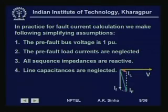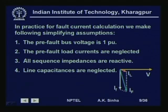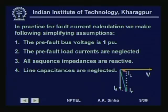In practice, we make some more assumptions. Since pre-fault currents are generally much smaller compared to fault currents, we neglect load impedances. The main assumption is that pre-fault bus voltage is 1 per unit. This is a valid assumption because under normal operating conditions, bus voltages in the power system are very near 1 per unit — typically of the order of 0.98 to 1.02 per unit. Therefore, it is valid to assume that pre-fault bus voltage is 1 per unit.